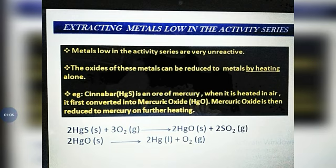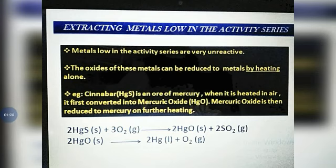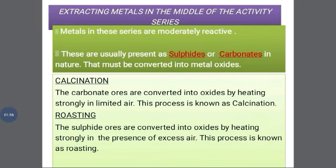Here is one example: cinnabar is an ore of mercury. When it is heated in air, it is first converted to mercuric oxide, and when we heat it again, mercuric oxide gives pure mercury. So the three steps are: metal sulfide → metal oxide (by heating) → pure metal. This is the method used to extract metals low in the activity series.